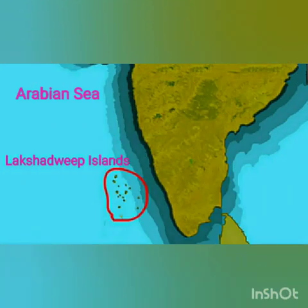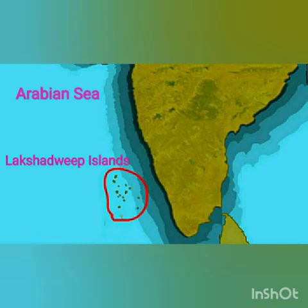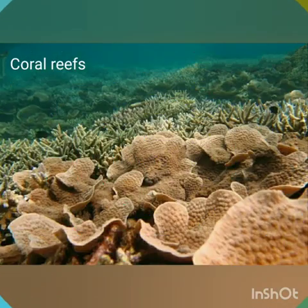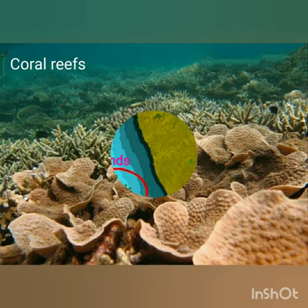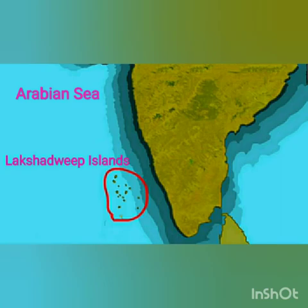The Lakshadweep Islands is a group of 36 islands in the Arabian Sea. They are close to the Malabar coast. People live in only 10 of these islands. Fishing and agriculture are the main occupations. These islands are made of coral reefs. It is a union territory and Kavaratti is its capital. It is visited by thousands of tourists every year.